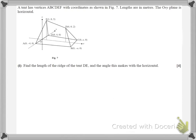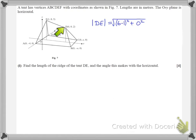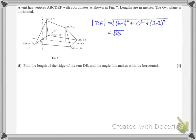In part 1 we're asked to find the length of the ridge of the tent, DE. This is where we just use Pythagoras in 3D. The length of DE: we're looking for the difference between the X coordinates — we've got 6 and 1, so the difference is 5, and we square that. We add it to the difference between the Y coordinates squared — both Y coordinates are 0, so that's a distance of 0. Finally, the difference between the Z coordinates is 3 minus 2 equals 1, squared. So 5 squared is 25, plus 1 squared is 1, giving DE equals the square root of 26.